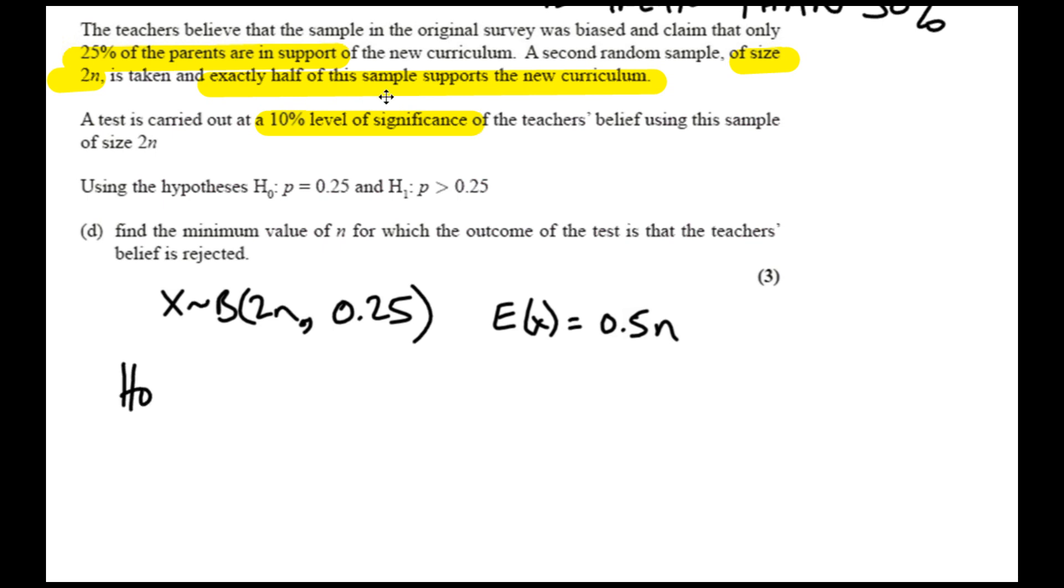So the hypothesis is H0 and H1. H0, probability equals 0.25. H1, probability is greater than 0.25. This is what the teachers are believing. Find the minimum value of n for which the outcome of the test is that the teacher's belief will be rejected. Well, the teacher's belief is H0. So it's really saying, find the minimum value for n for which H0 will be rejected. And that will be my starting point.